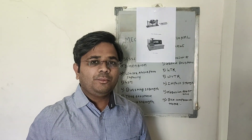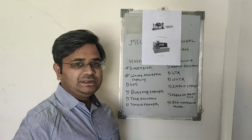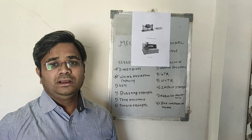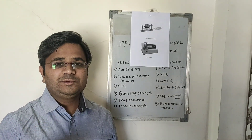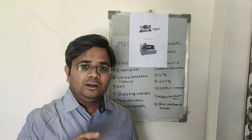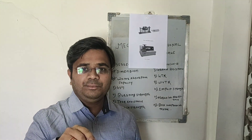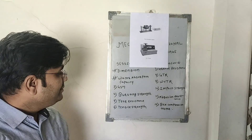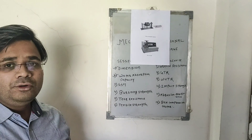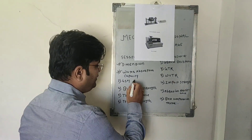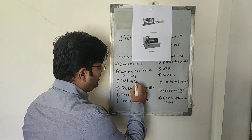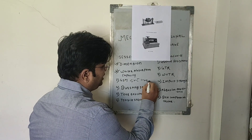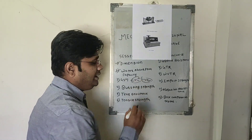The third property is GSM, which stands for Grammage per Square Meter. GSM can be calculated by taking the sample and cutting it into equal dimensions — either 5 by 5 or 10 by 10 — depending on your requirement.